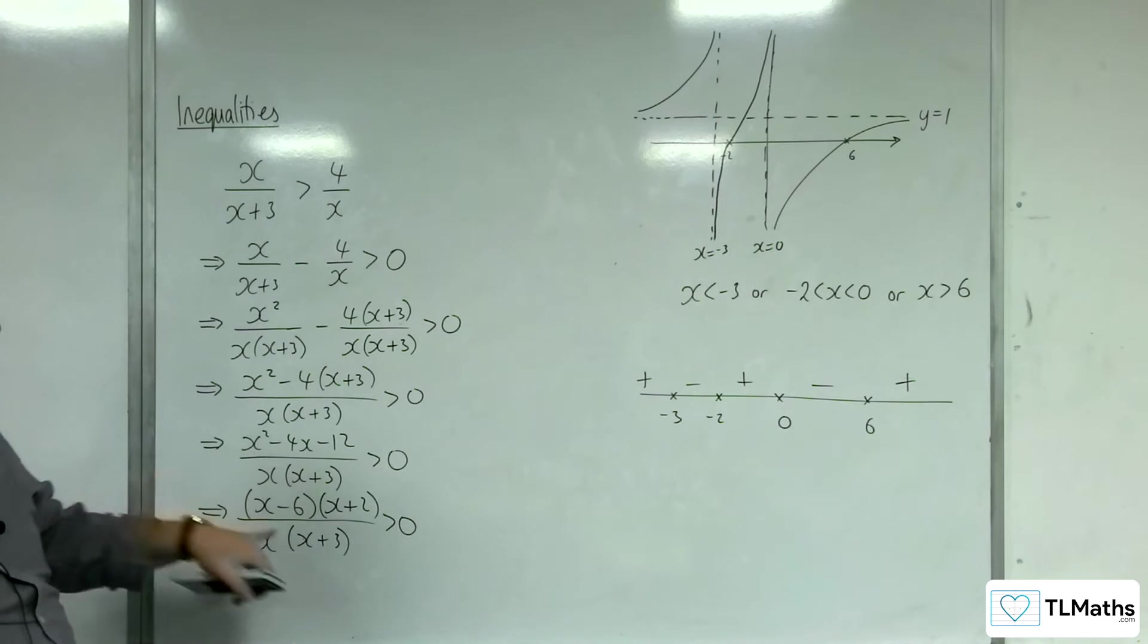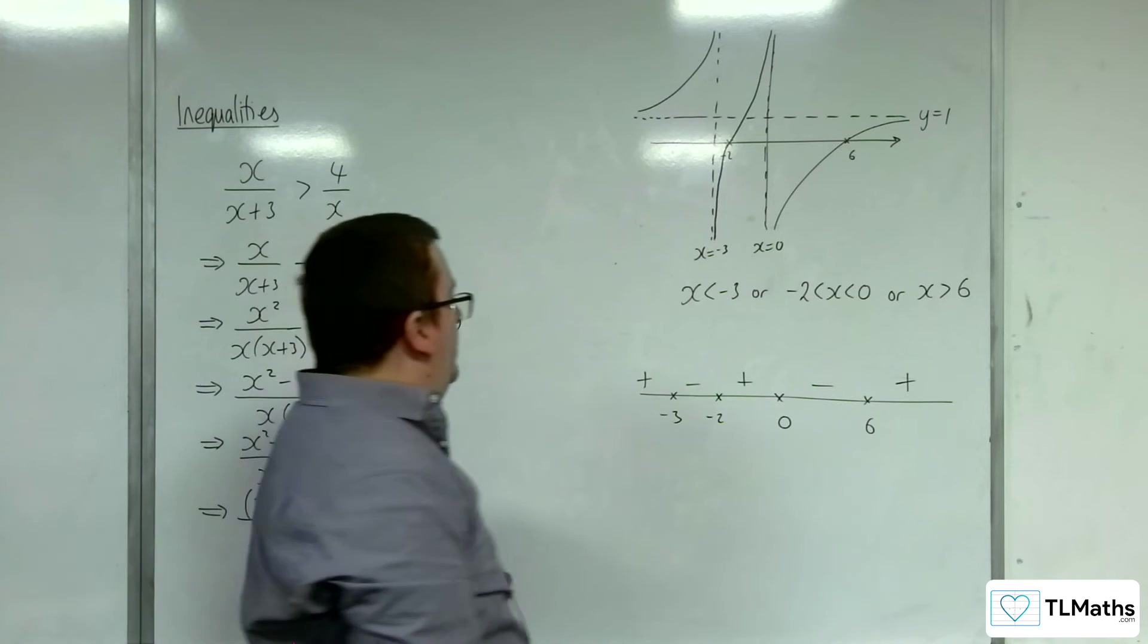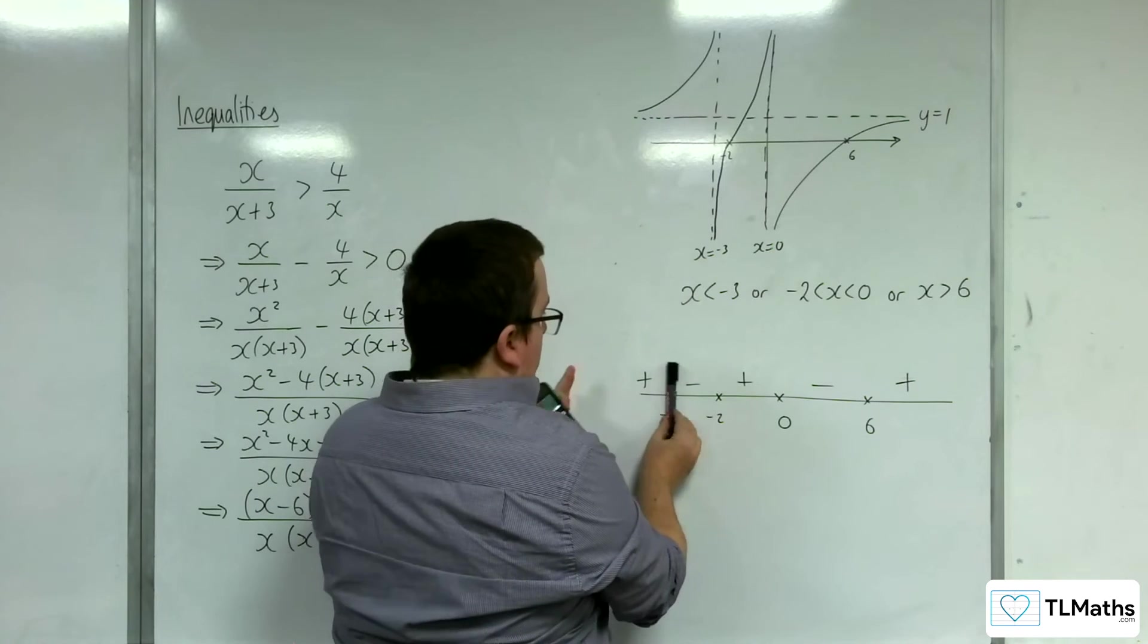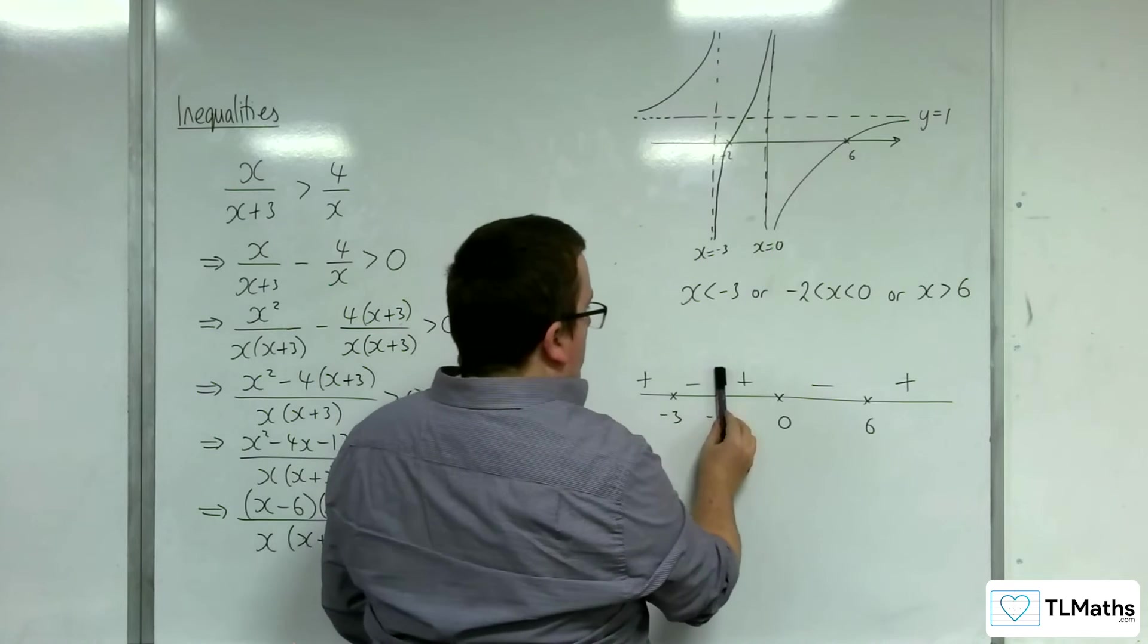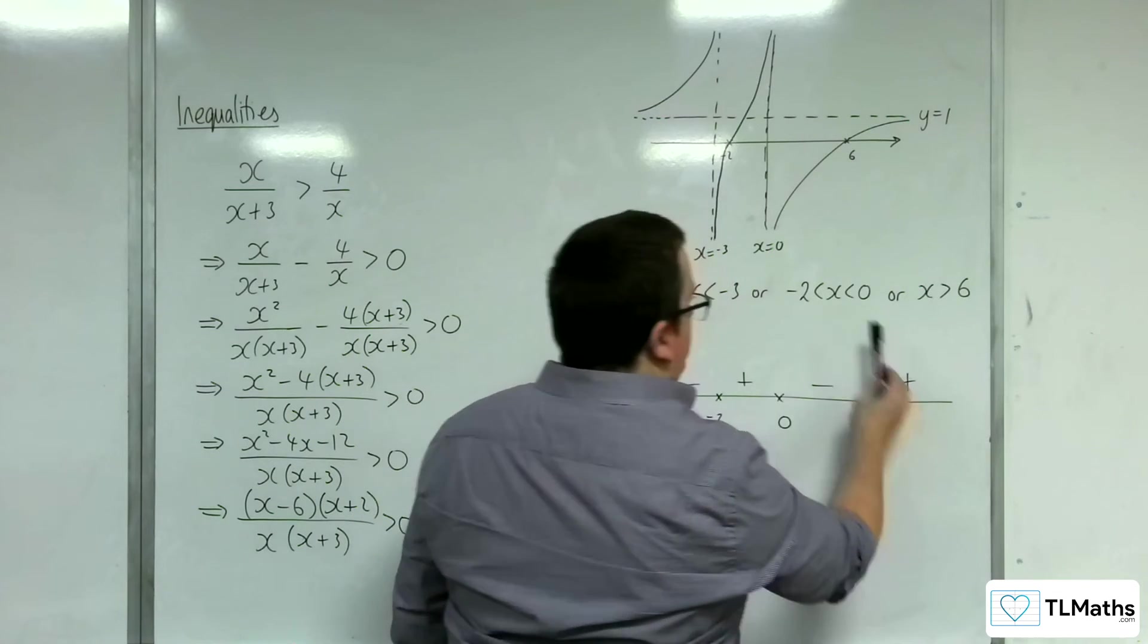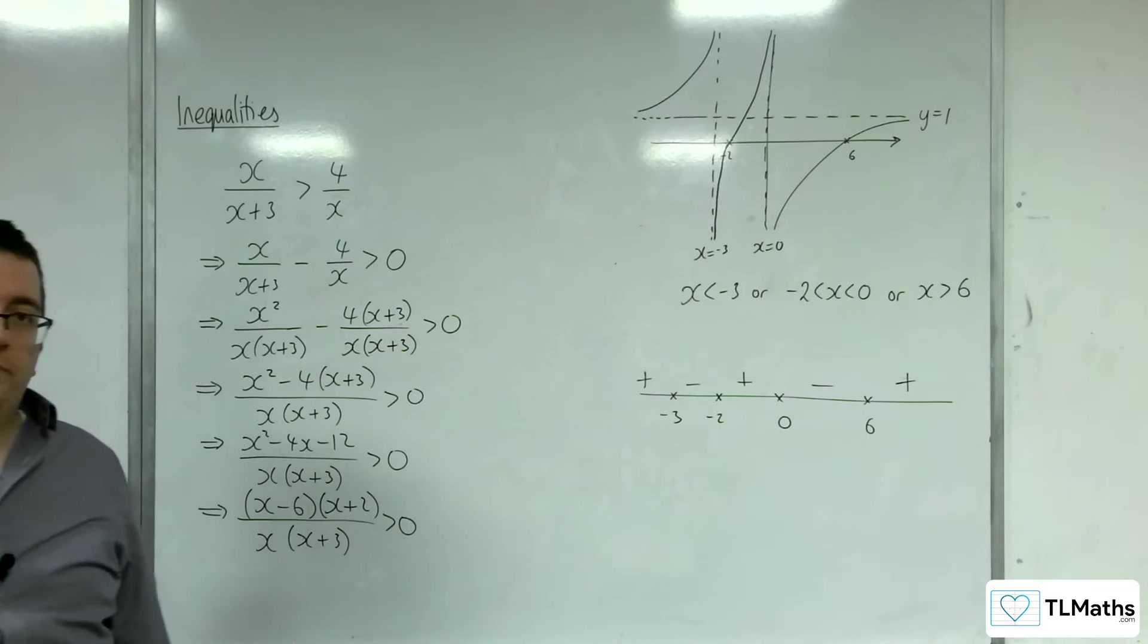Okay, so where is the graph above the x-axis where it's positive? There, there, and there. Okay, as identified. Okay, so personally, I would say that the easiest way here, because the graphs are getting quite complicated to sketch,